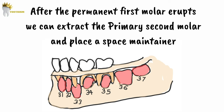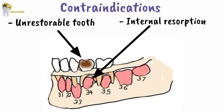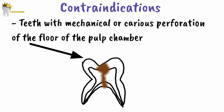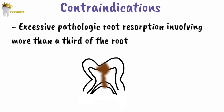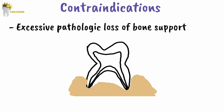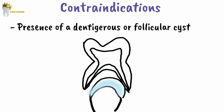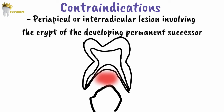There are certain contraindications for pulpectomy in primary dentition: an unrestorable tooth, internal resorption in the roots visible on radiographs, teeth with mechanical or carious perforations of the floor of the pulp chamber, excessive pathologic root resorption involving more than a third of the root, excessive pathologic loss of bone support with loss of normal periodontal attachment, presence of a dentigerous or follicular cyst, and a periapical or interradicular lesion involving the crypt of the developing permanent successor. In all of these cases, the prognosis is obviously very poor, so pulpectomy is contraindicated.